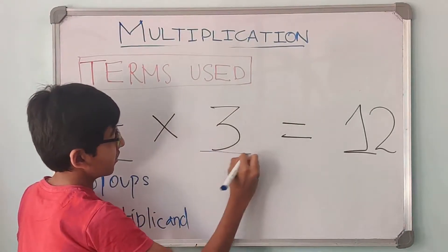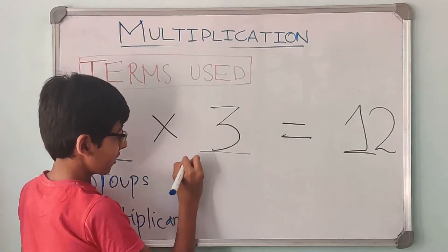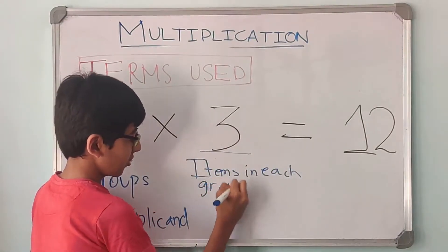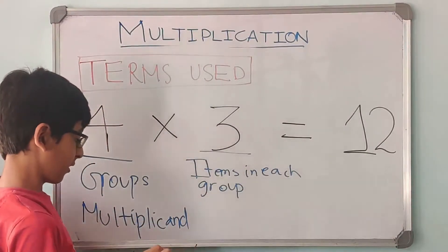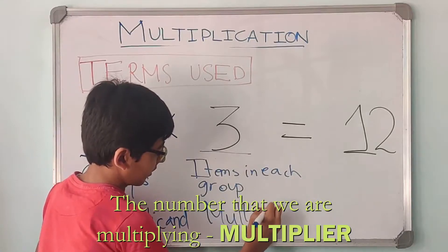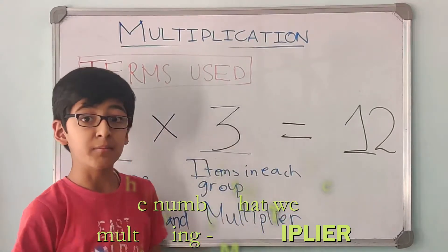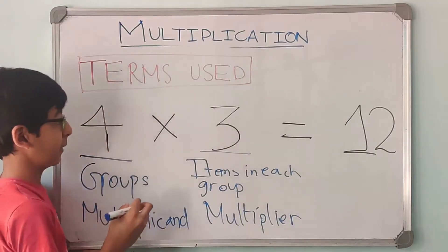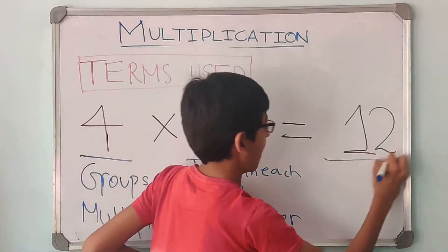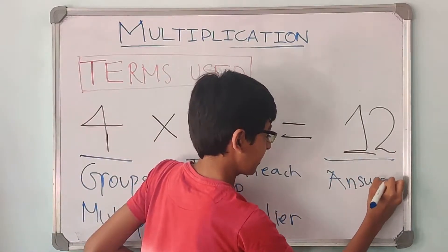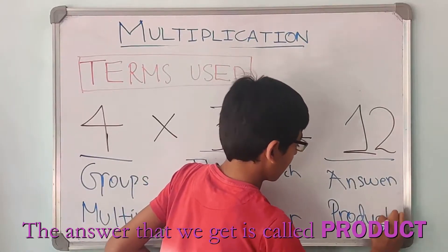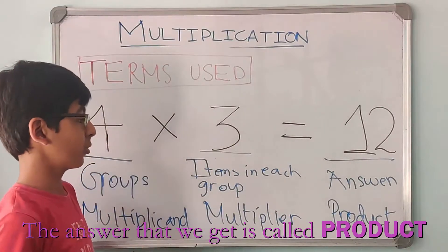The next number, that is 3, is the number of items in each group. The number of items in each group is called the multiplier. So multiplier is the number that we are multiplying with. So we are multiplying 3, 4 times. And the answer that we get is called the product, P-R-O-D-U-C-T.